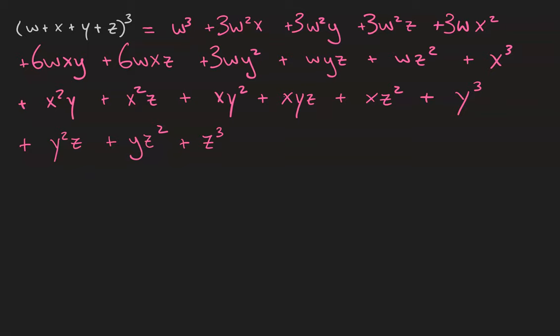w y squared gets a coefficient of 3. w y z gets a coefficient of 6. w z squared gets a coefficient of 3. x cubed gets a coefficient of 1. x squared y gets a coefficient of 3. x squared z gets a coefficient of 3, so does x y squared. x y z will have a coefficient of 6. x z squared will have a coefficient of 3. y cubed will have a coefficient of 1. y squared z will have a coefficient of 3. y z squared will have a coefficient of 3, and z cubed will have a coefficient of 1. And that's it, w plus x plus y plus z cubed, just like that.